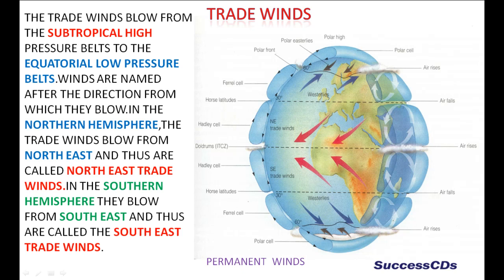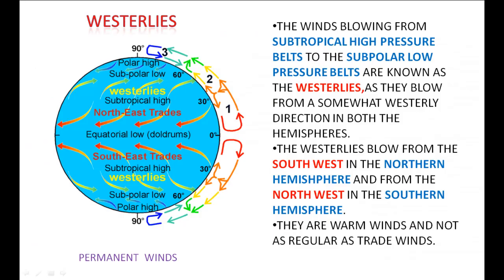The winds blowing from subtropical high pressure belts to the subpolar low pressure belts are known as the westerlies, as they blow from a somewhat westerly direction in both hemispheres. The westerlies blow from the south west in the northern hemisphere and from the north west in the southern hemisphere. They are warm winds and not as regular as trade winds.